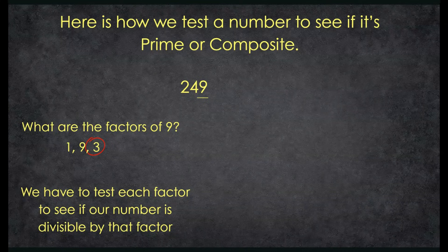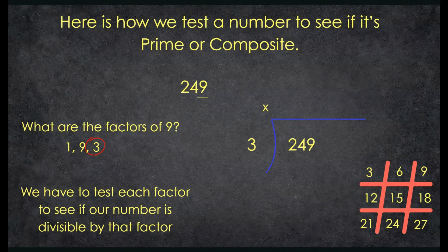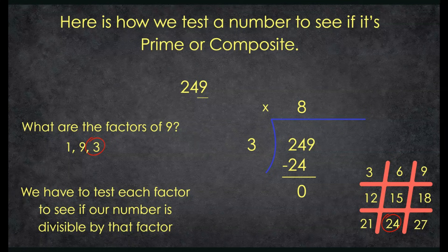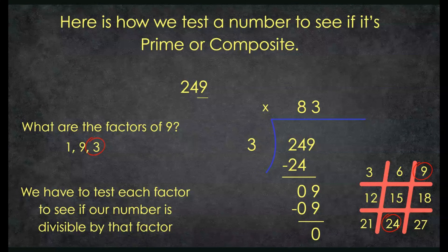I'm going to test 3 first using division. My first question: how many groups of 3 go into 2? Zero. How many groups of 3 go into 24? That's 8 — 8 groups of 3 go into 24. I multiply, subtract, and get 0. Then I bring down the 9. How many groups of 3 go into 9? That's 3 — 3 groups of 3 go into 9. I multiply, subtract, and I have a remainder of 0. That tells me 249 is divisible by 3.